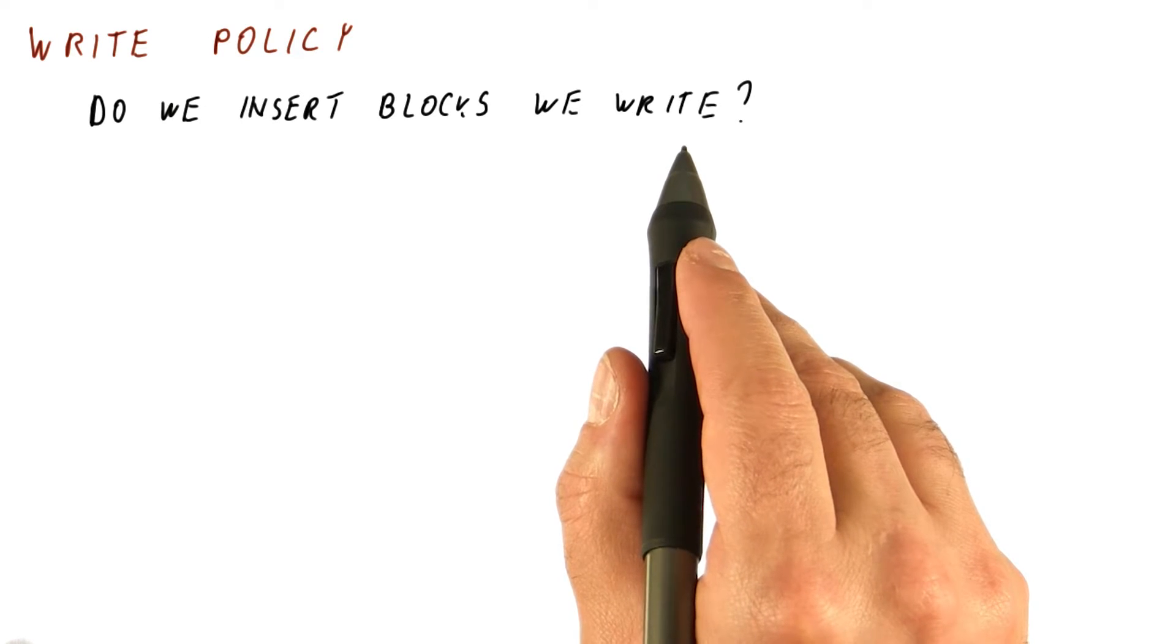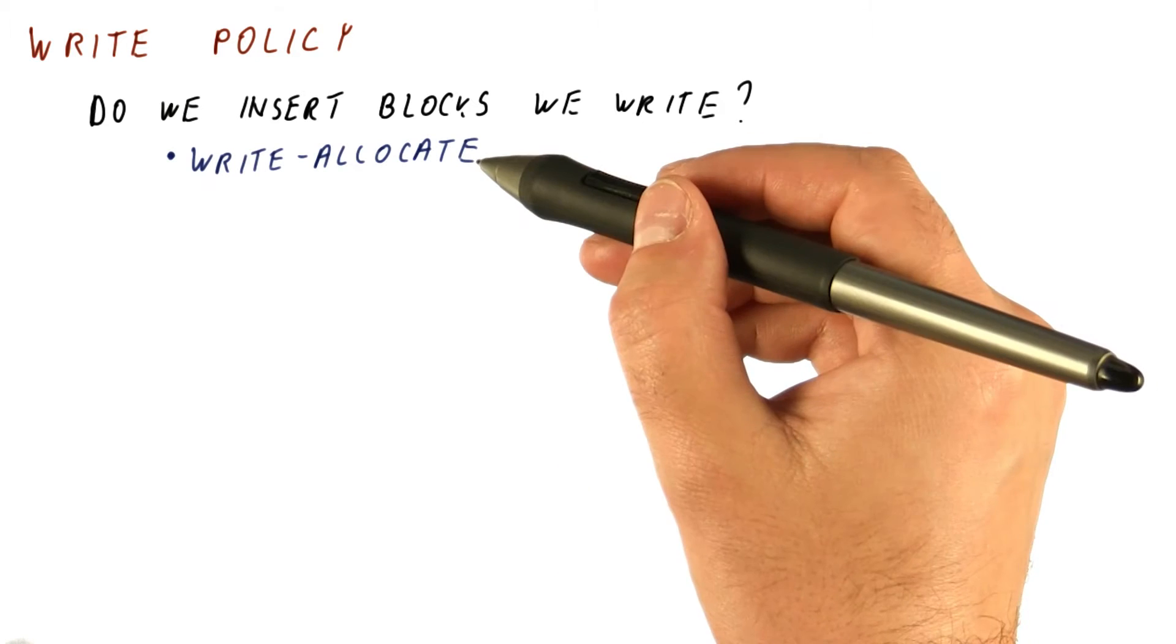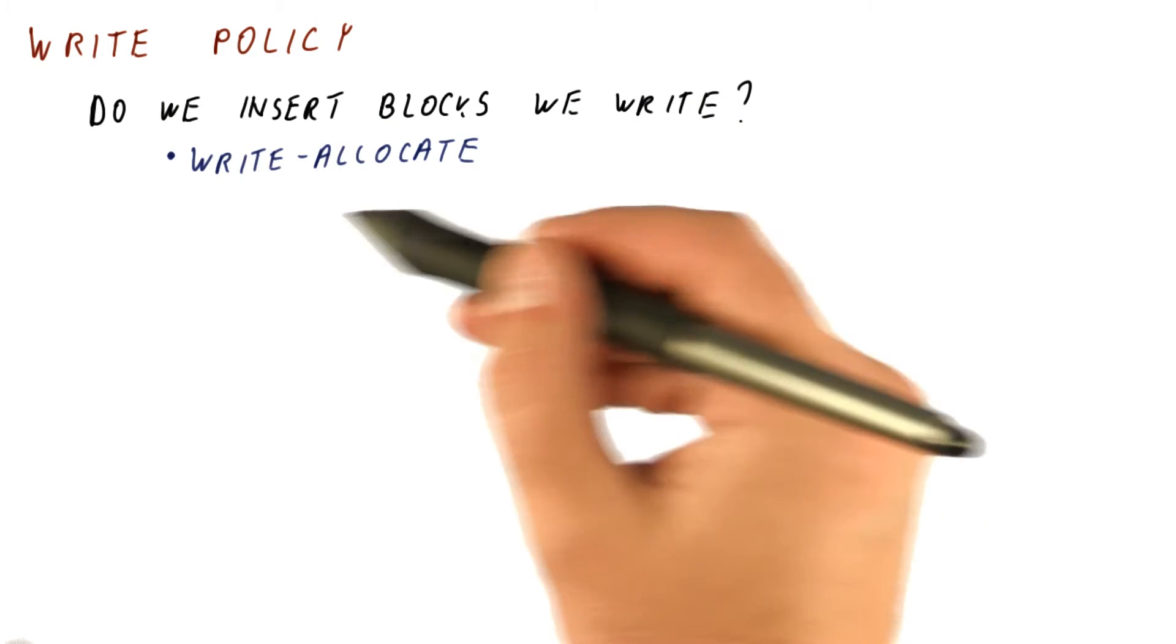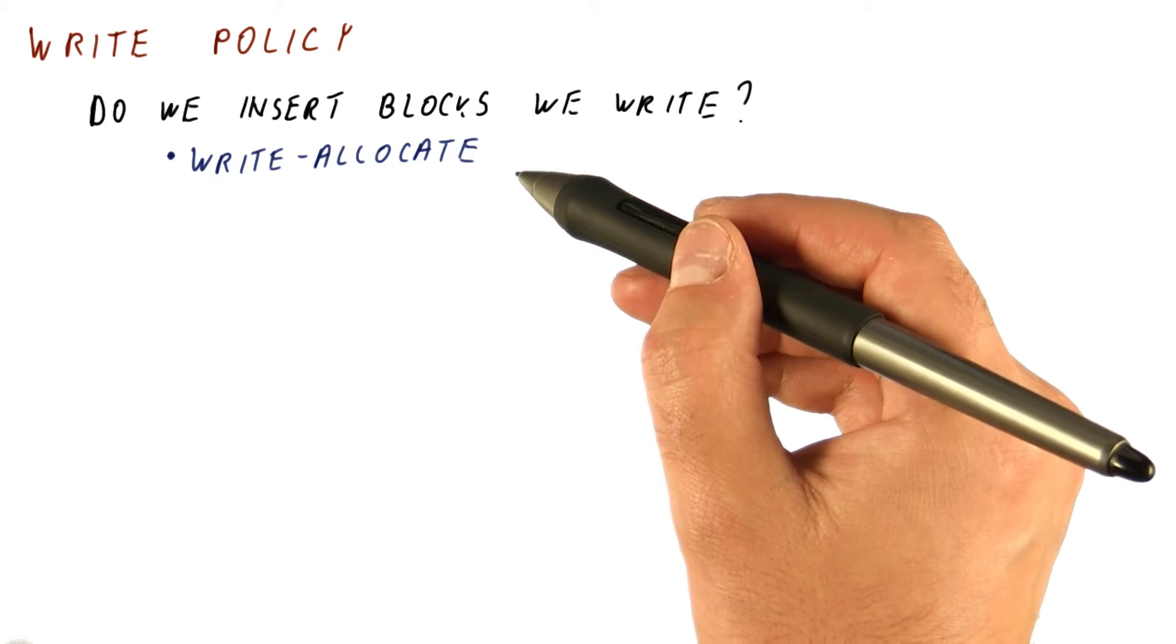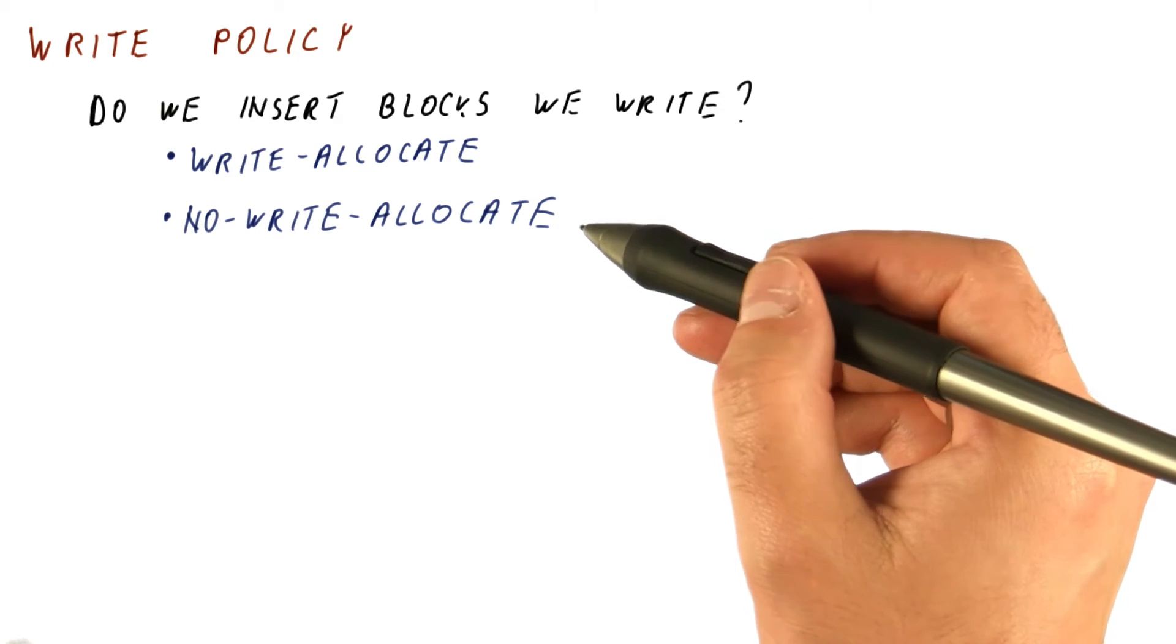So we have a write miss. The question is, does the block get brought to the cache or not? There are two types of caches. The first type is a write-allocate cache. It brings the block that we write into the cache. The second type does not.